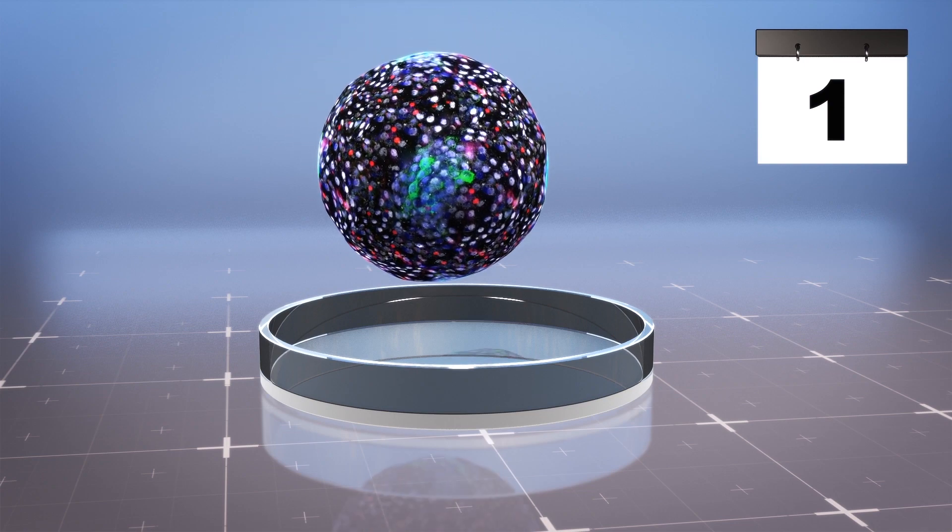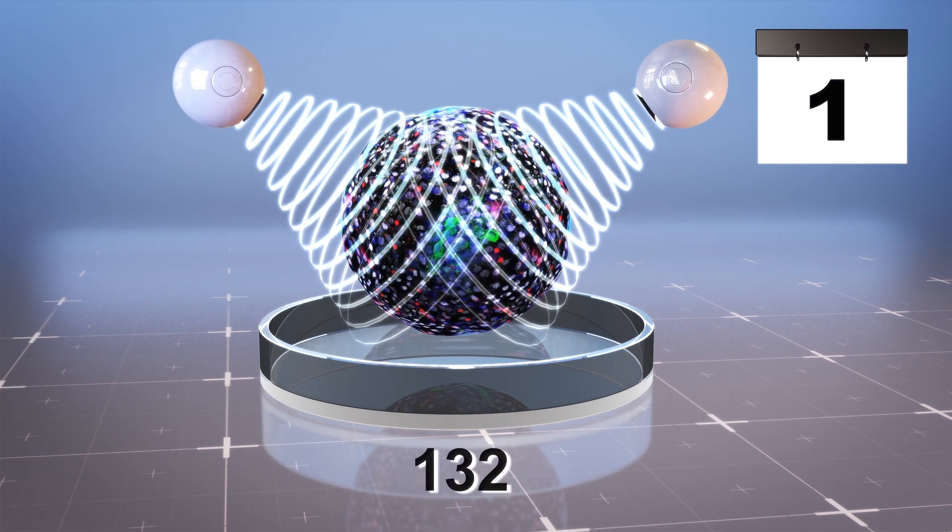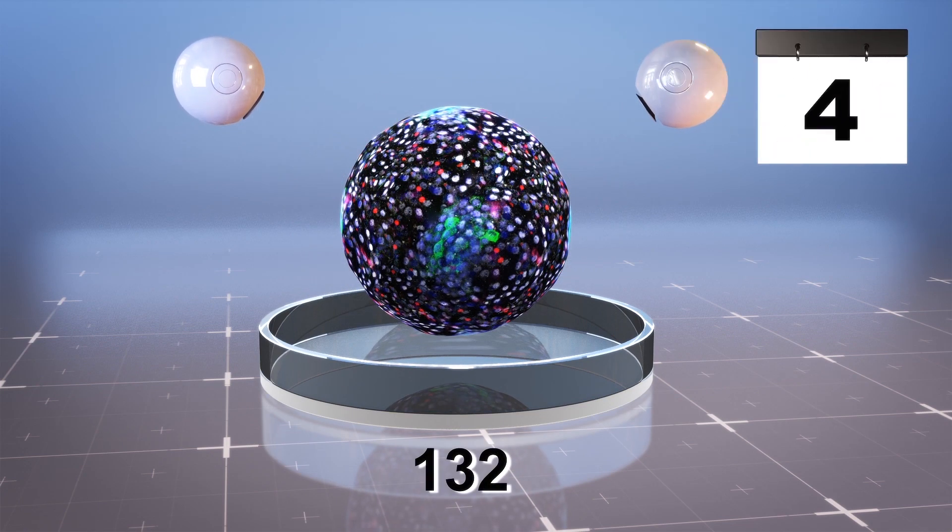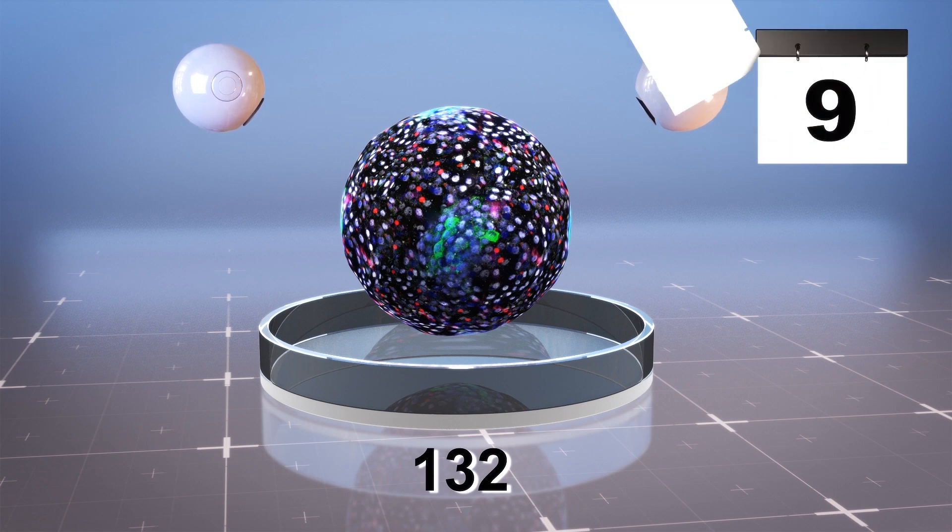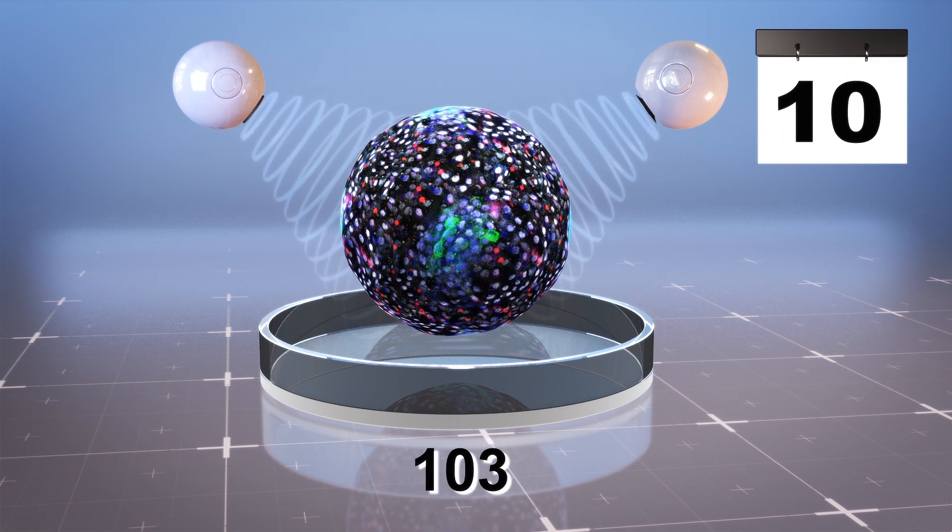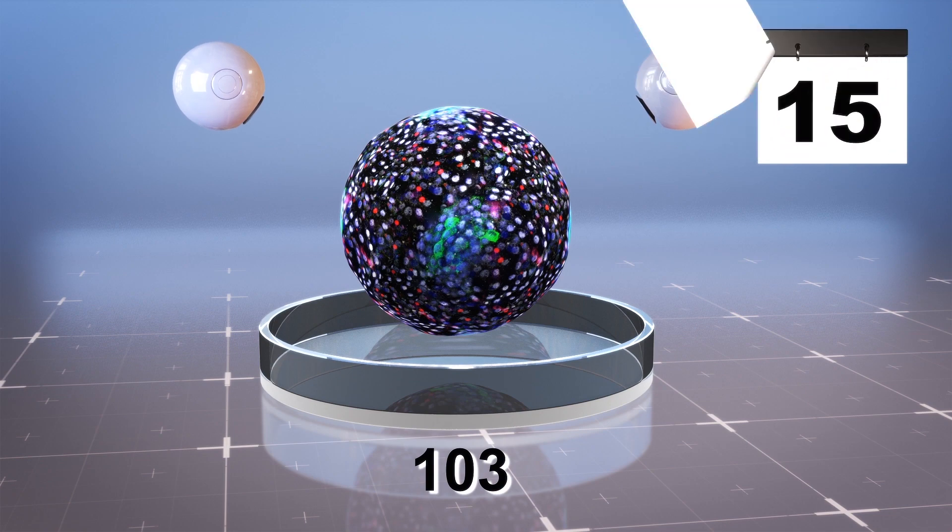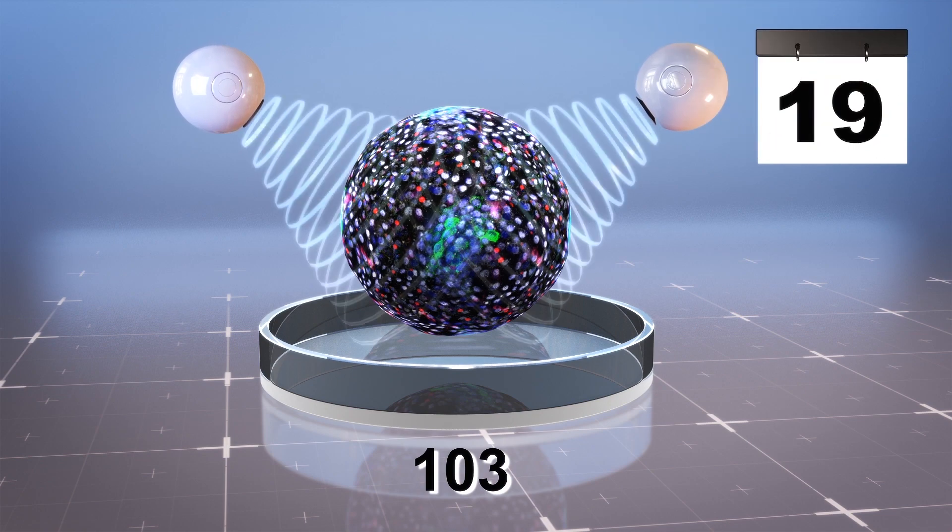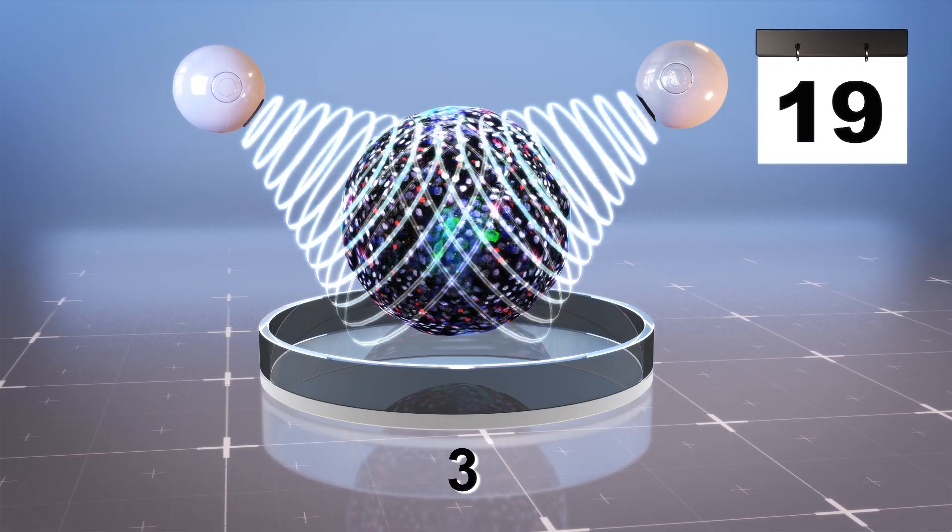Science Alert notes that 132 of the chimera embryos formed initially. After 10 days, 103 of the chimeric embryos were still alive and developing. By day 19, only three chimeras remained alive, and on day 20, all of the hybrid embryos had been destroyed for ethical reasons.